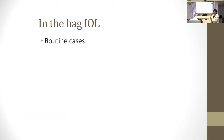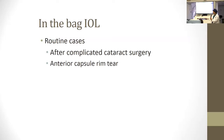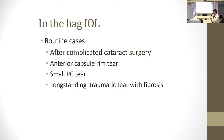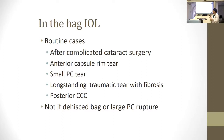When would you use a lens in the bag? For routine cases we always try to put the lens in the bag. After complicated cataract surgery you could use a lens in the bag in some situations — for example, if there's an anterior capsule rim tear, a small posterior capsule tear, or a long-standing traumatic tear with fibrosis you know is not going to extend. You wouldn't put a lens in the bag if there's significant zonular dehiscence or a large posterior capsule rupture.